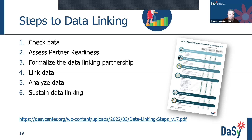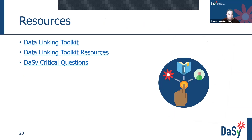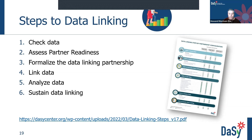The steps to data linking include six steps: check data, assess partner readiness, formalize the data linking partnerships, link data, analyze data, and sustain data linking. The graphic also includes information about partnership configuration, whether each activity is required, recommended, or optional, and what team members should be involved. The section also covers partnership configuration — whether it's a single agency single program, single agency multiple programs, or multiple agencies and multiple programs.